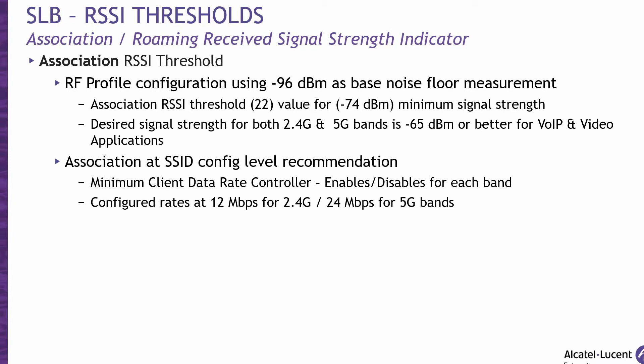Now let's discuss smart load balancing via the association and roaming received signal strength indicator, or RSSI. The association RSSI threshold parameters are used to set thresholds at the RF profile level for optimizing connectivity when associating with an access point by denying client access with a weak signal. Clients with a signal strength value lower than the association threshold would not be allowed to associate with the access point. By default, this parameter is disabled. These thresholds are applied to 2.4 GHz or 5 GHz bands separately. For newer 802.11ax and 11ac capable devices, the association parameters can be set per SSID through the minimum client data rate and minimum management rate settings. The minimum client data rate values need to be equal or higher than the management rates so the roaming algorithm can be triggered.